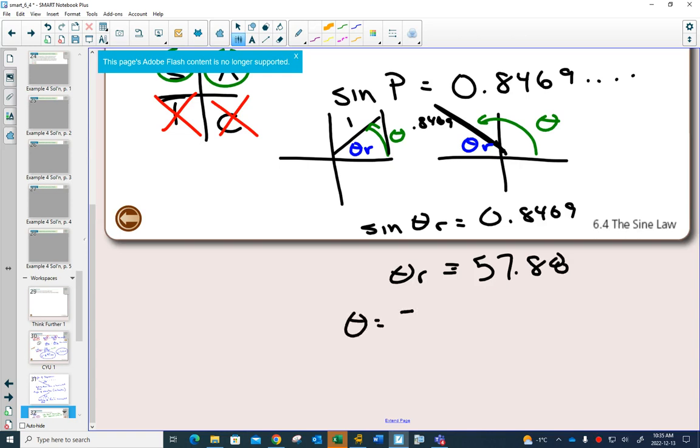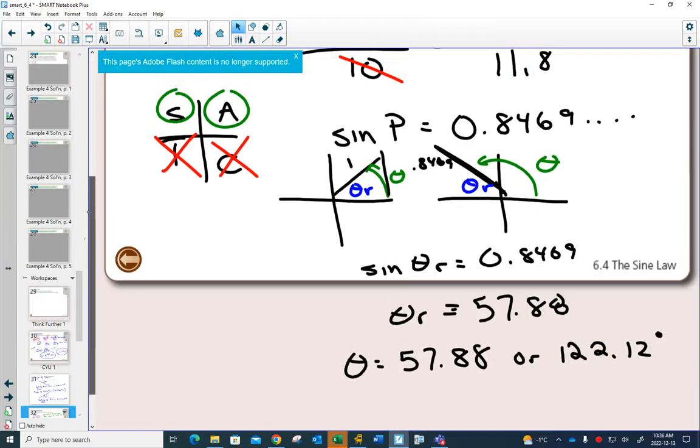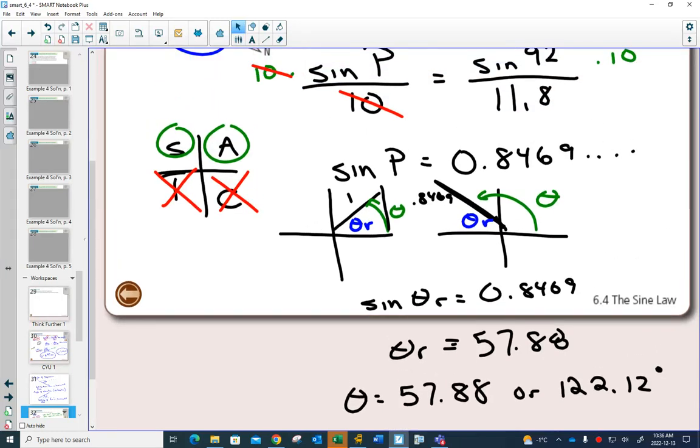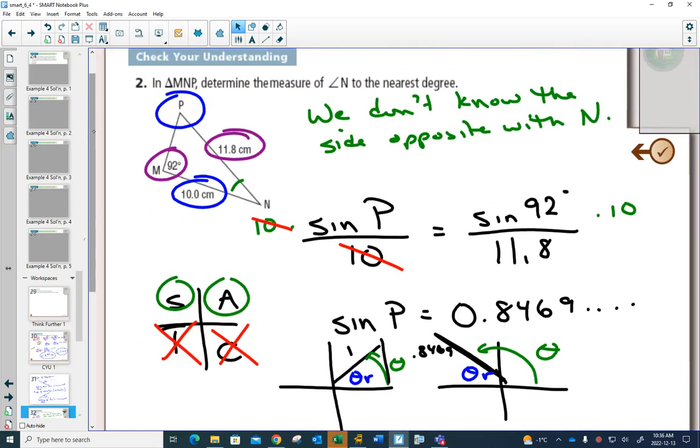So my actual angle could either be 57.88, or in quadrant 2, it could be 180 minus that, 122.12. Now, we are dealing with an actual triangle in this question. Let's go back to our picture. We were solving for angle P.